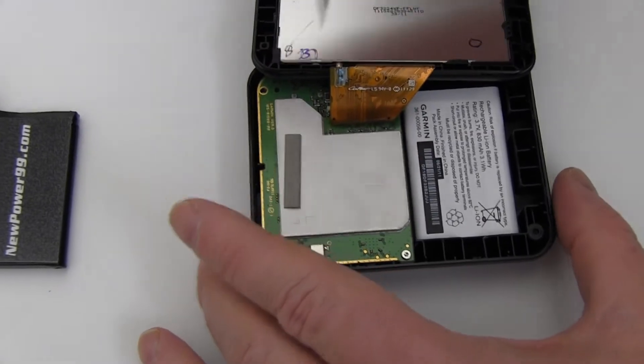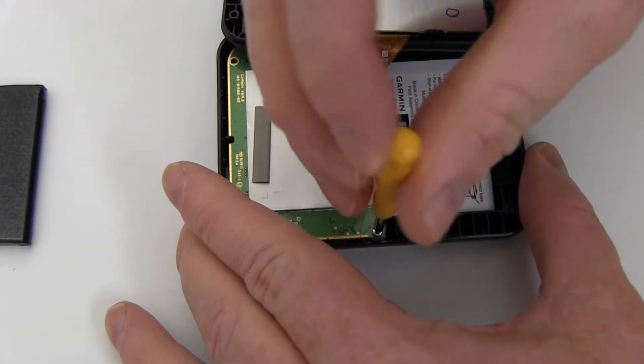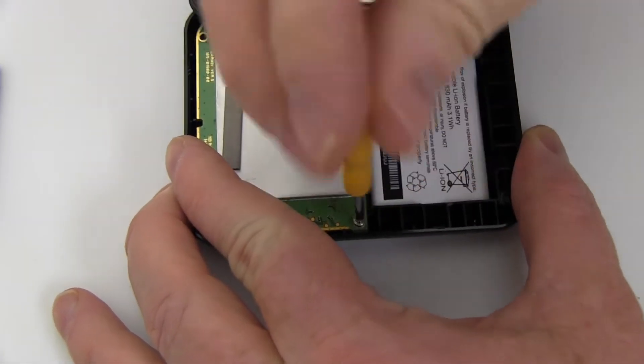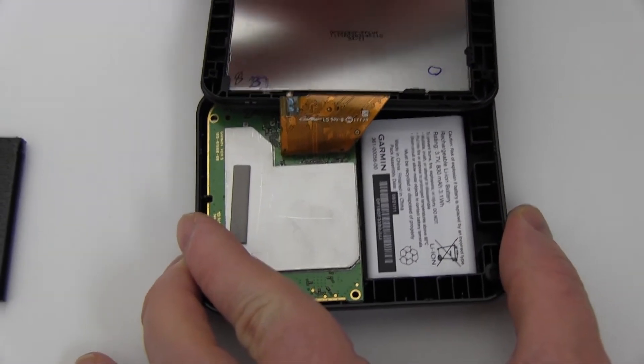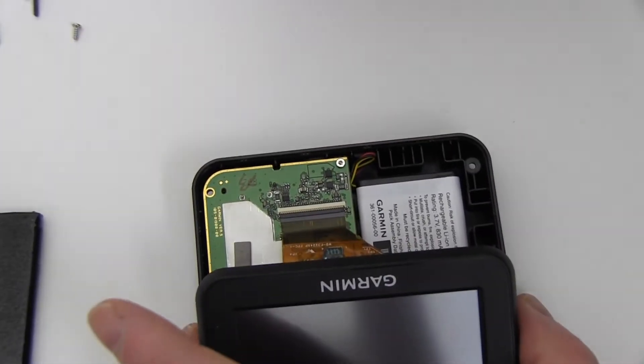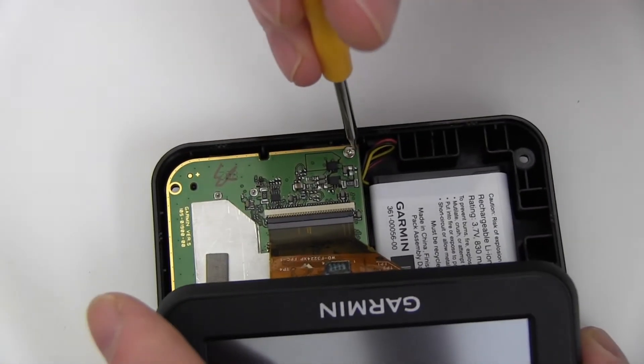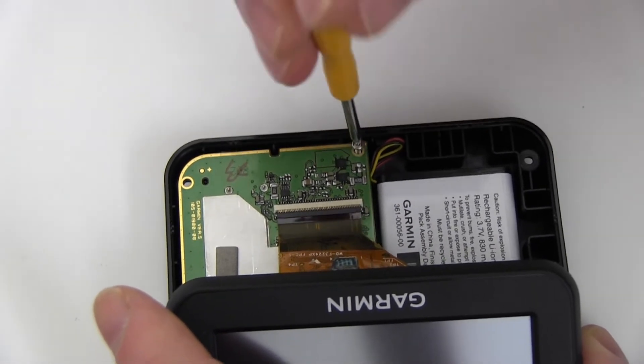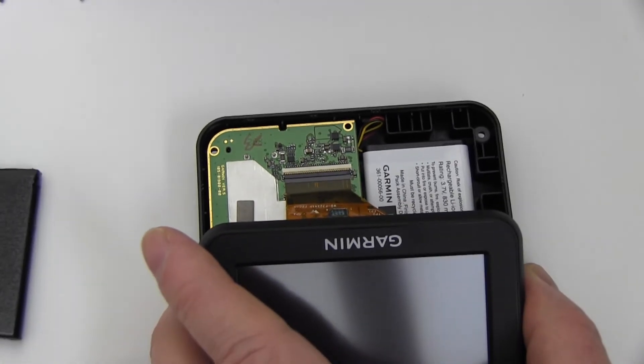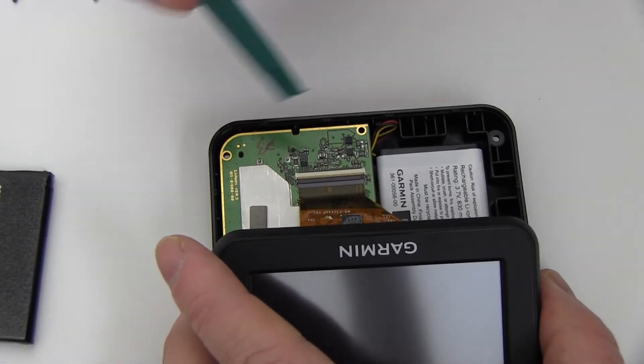Remove the two screws securing the circuit board. Gently lift the circuit board out of its compartment.